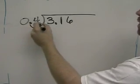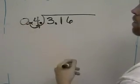In this case, 0.4, we need to move it over one space to the right, turning the 0.4 into a 4.